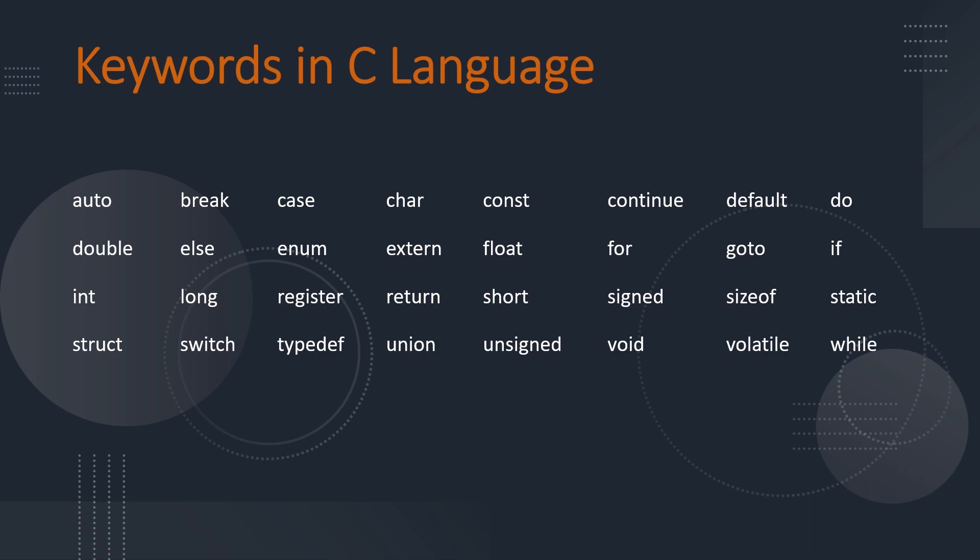For example, you might see some data types in this such as int, long, char, etc. So these are also called keywords and if you remember, these allow you to declare variables which hold a specific type of data. So keywords are just that.